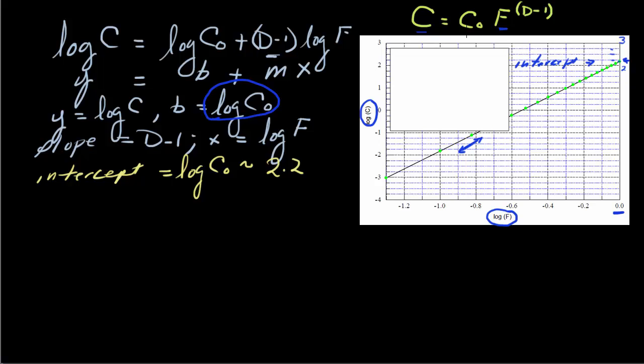What we'd like to do though is figure out what C zero is. And C zero then would be equal to what? Well, we know that the log of C zero is the power that you raise the base 10 to in order to get C zero. So we know that we should be able to take 10 to the log of C zero, and this should be equal to C zero. And so C zero would be equal to 10 to the 2.2 power.